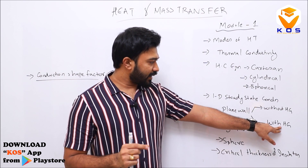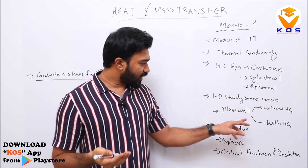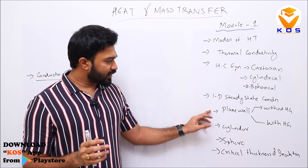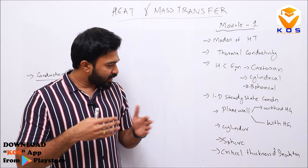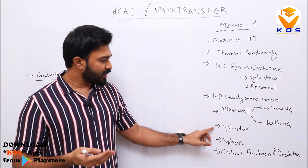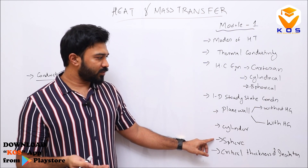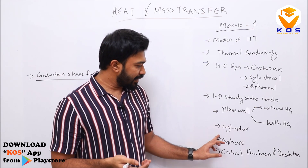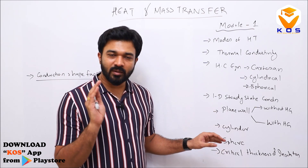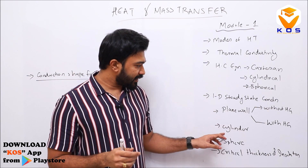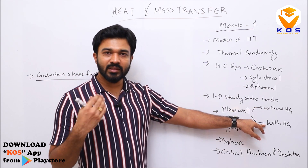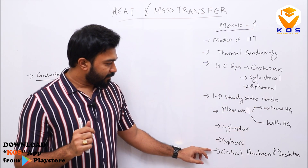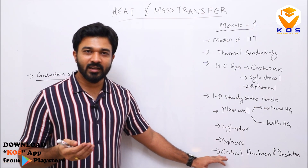We will examine how to do the derivation of heat generation. Without heat generation, the plane, cylinder, and sphere are very helpful. The equations cover composite plane, composite cylinder, and composite sphere. In previous question papers, we have problems on these topics — cylinder and sphere especially. We must also examine the derivation of heat generation. Then, the important topic is critical thickness of insulation.